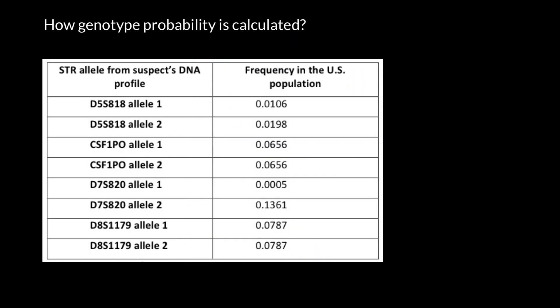Now let's return to our table here. We see eight alleles, but for each locus we have two alleles — one locus, two alleles. You see identical names: allele number one, allele number two. Here is the second locus, also two alleles; third locus and fourth locus. Each locus is represented by two alleles because we are diploid. And here in this column we can find the probability or frequency of each allele.